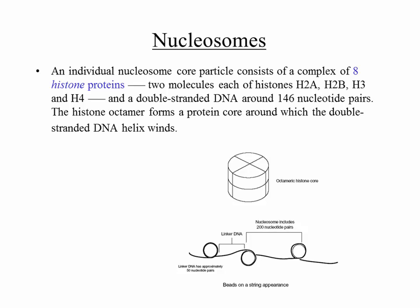An individual nucleosome core particle consists of a complex of eight histone proteins — two molecules each of histones H2A, H2B, H3, and H4. All of this fits together to produce a bobbin on which double-stranded DNA can be wound; winding it once requires 146 base pairs. The stuff in between, going from one bobbin to the next, is called linker DNA — about 50 base pairs. So a nucleosome is one bobbin with DNA wound around it plus linker, about 200 base pairs total.